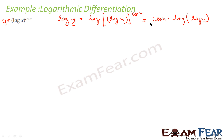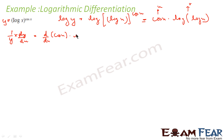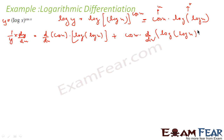Now I can differentiate this — very simple because this is a product rule formula: this function is u and this function is v. And this is a composite function. So if you differentiate, this becomes 1 by y times dy by dx, because this is log y. This equals d by dx of cos x times log(log x), which by product rule is: [d by dx of cos x] times log(log x) plus cos x times [d by dx of log(log x)]. d by dx of cos x is minus sin x, so: minus sin x times log(log x) plus cos x times d by dx of log(log x).